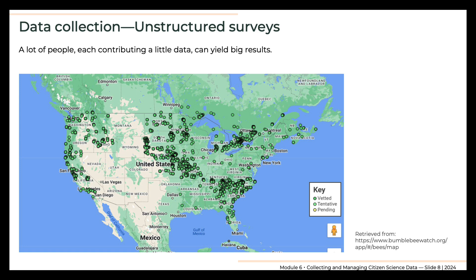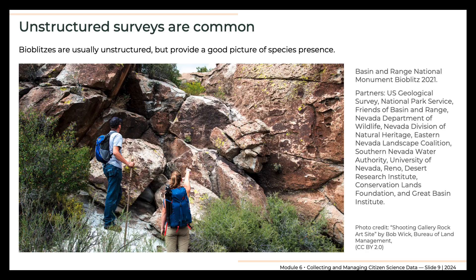In addition, unstructured surveys become increasingly more powerful as the number of observations increases. That is, a large amount of useful information can be collected by seeking a small amount of data from a large number of people. Unstructured surveys are common in citizen science, partly because they are easiest to develop and carry out.